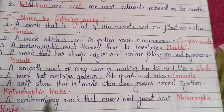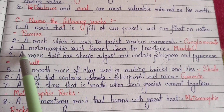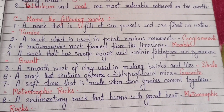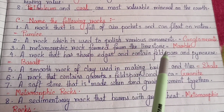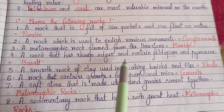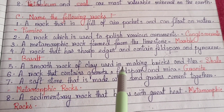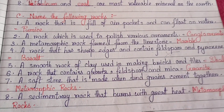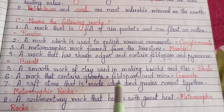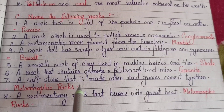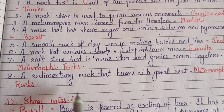Next, Section C: Name the following rocks. Number one: a rock that is full of pockets and can float on water — that is pumice. Number two: a rock which is used to polish various ornaments — conglomerate. Number three: a metamorphic rock formed from limestone — marble. Number four: a rock that has sharp edges and contains feldspar and pyroxene — basalt. Number five: a smooth rock of clay used in making bricks and tiles — shale. Number six: a rock that contains quartz, feldspar and mica — granite.